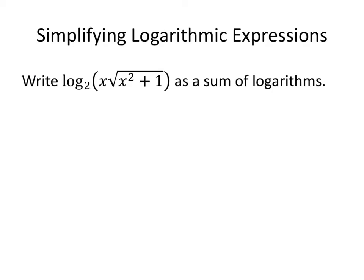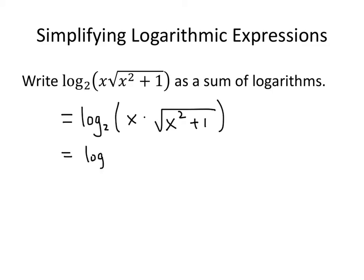Now let's actually put these rules into practice. We want to write the log base 2 of x times the square root of x squared plus 1 as a sum of logarithms. The first thing we notice is that this thing inside our logarithm is a product — it's x times that big square root thing. So we can use our logarithm rule that says we can rewrite that as the logarithm of the first thing plus the logarithm of the second thing. When you have a product inside a logarithm, that breaks up as the sum of the two separate logarithms.